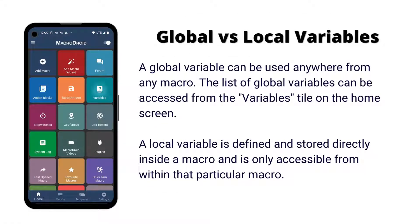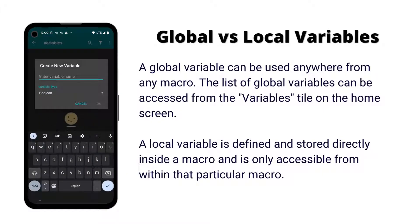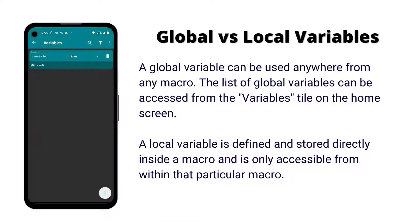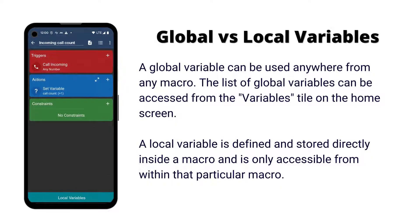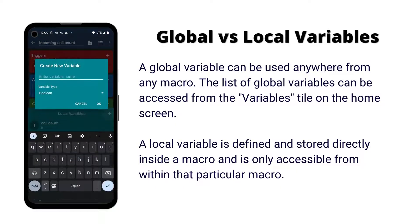From the home screen tile you can configure the list of global variables. A global variable is one that is accessible from any macro. From the macro edit screen you can configure the list of local variables. A local variable is only accessible from that macro.